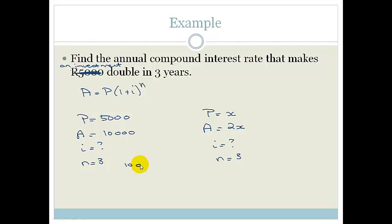We've got 10,000 equals 5,000 times 1 plus i to the 3. So we're going to get everything that's not in the bracket over to the side.